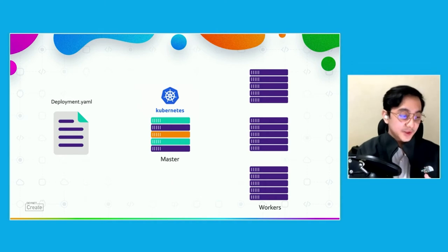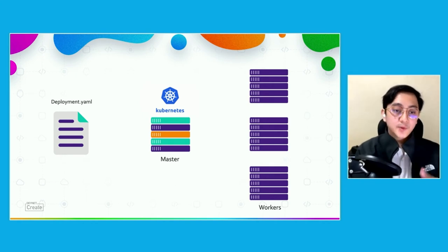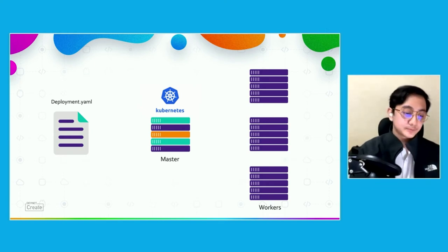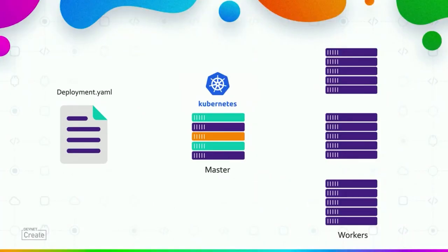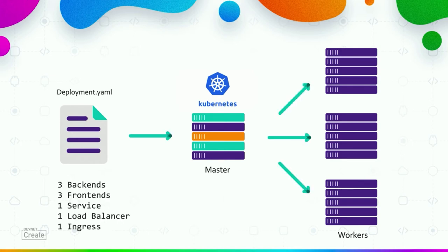You define a desired state in a deployment.yaml file, and Kubernetes ensures that whatever is in that file is always true and always running on the Kubernetes environment. In Kubernetes you have the concept of nodes — a master node containing the Kubernetes cluster services, responsible for communicating with different nodes, running containers, and managing the container lifecycle. Then you have worker nodes, which is where the actual containers are running.